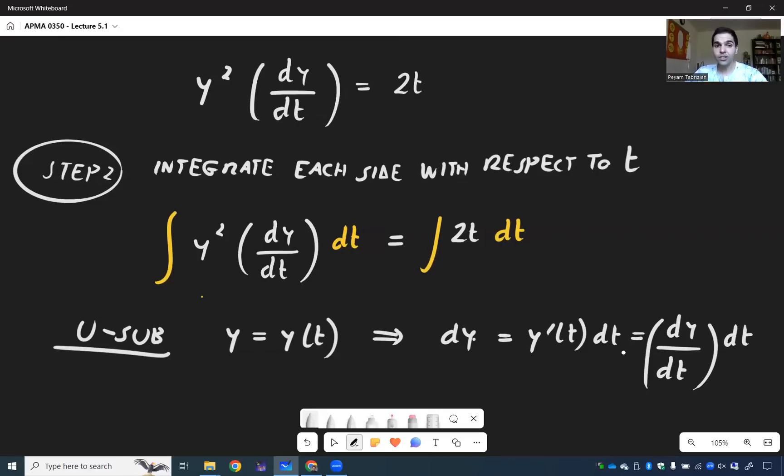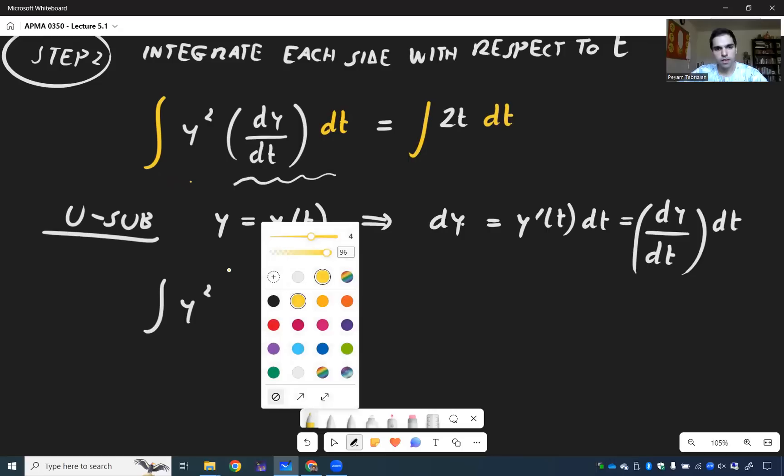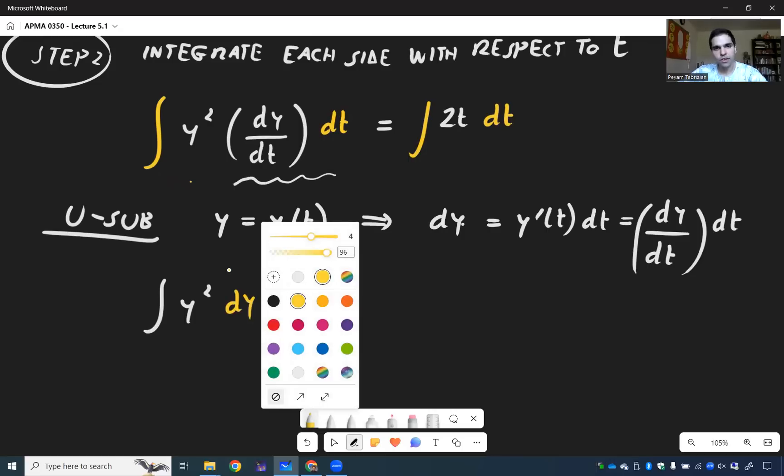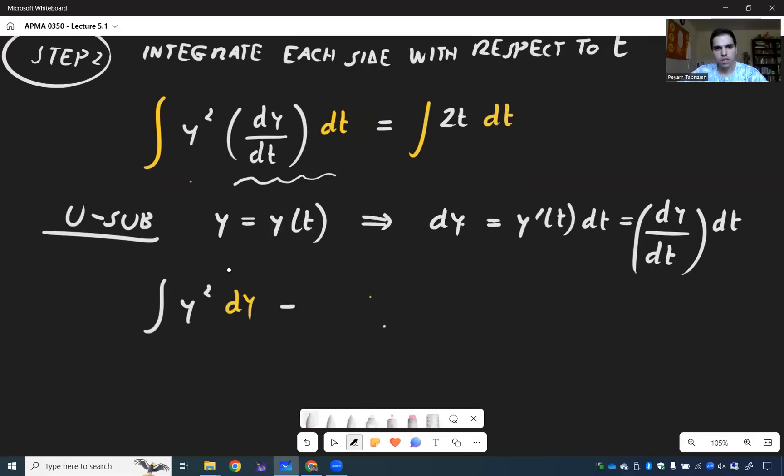And this is great because this appears precisely here. And so after the u sub, the left hand side then simply becomes integral of y squared dy equals integral of 2t dt.